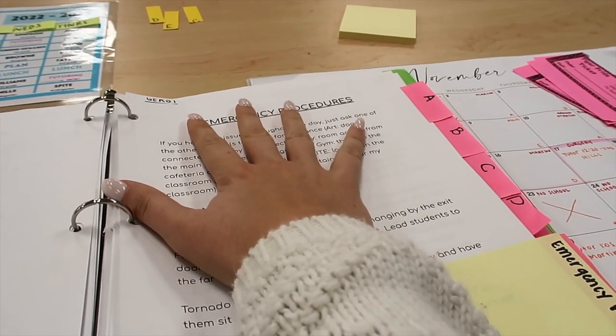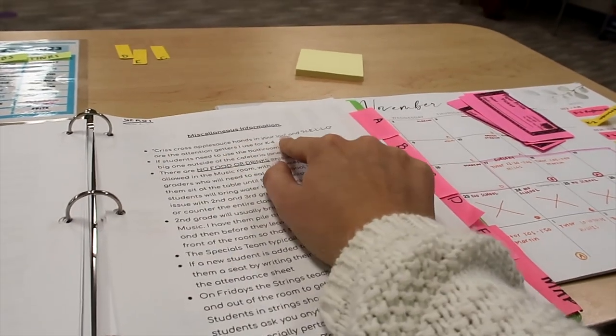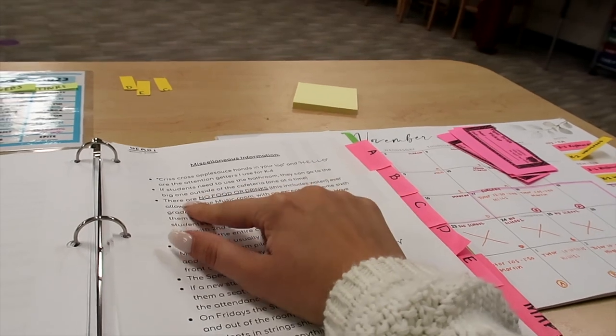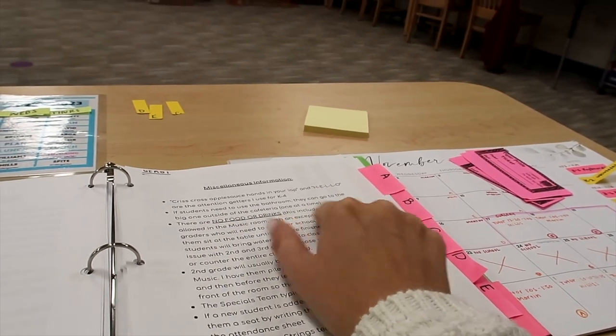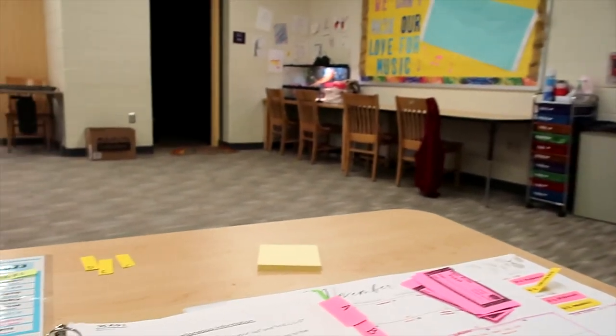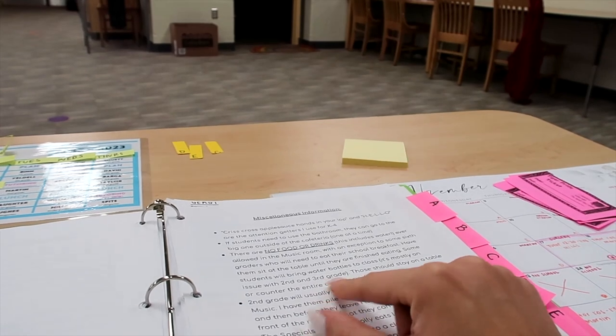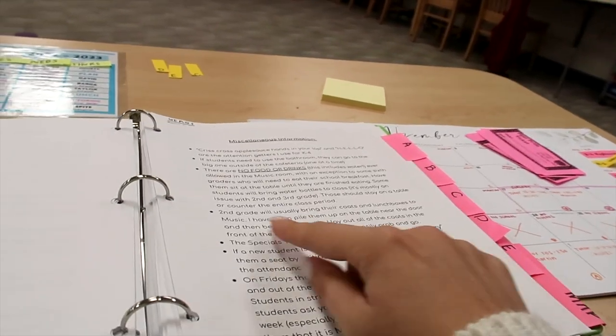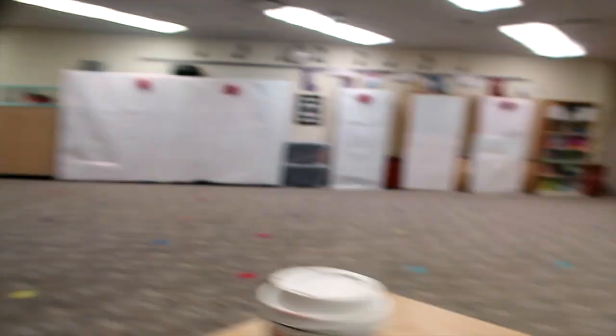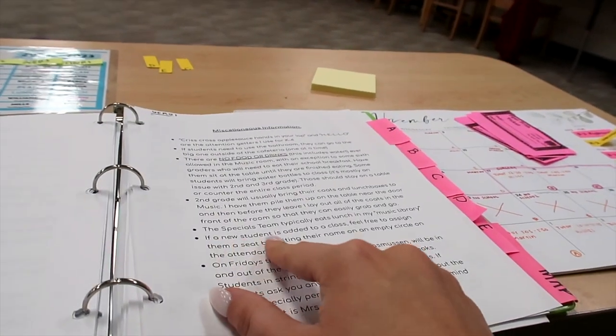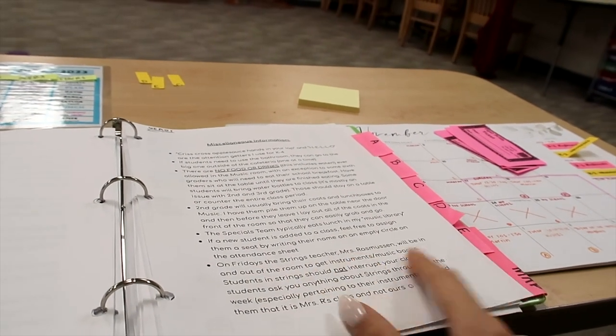This is just my emergency procedures, fire drill, lockdown drill. Here's miscellaneous information. Crisscross applesauce, hands in your lap, and H-E-L-L-O are attention getters I use for K-4. If students need to use the bathroom, they can go to the one I just told her which one. There are no food or drinks, including water, because I don't want them spilling it on my carpet, allowed in the music room, with an exception to some 6th graders who need to eat their school breakfast. I have them sit at that table. If kids bring water bottles to class, they need to stay on a table or a counter the entire class period. 2nd graders will bring their coats and lunchboxes because it backs up to their lunch. I have them pile them up on the table near my entrance, and then in the last few minutes of class, I lay them out on the floor so they can grab them and go. The specials team meets in my room. If a new student is added to a class, feel free to assign them a seat. On Friday, the strength teacher's here. The kids will come in. They should not interrupt your class, but they do need to grab their instruments from the closet.